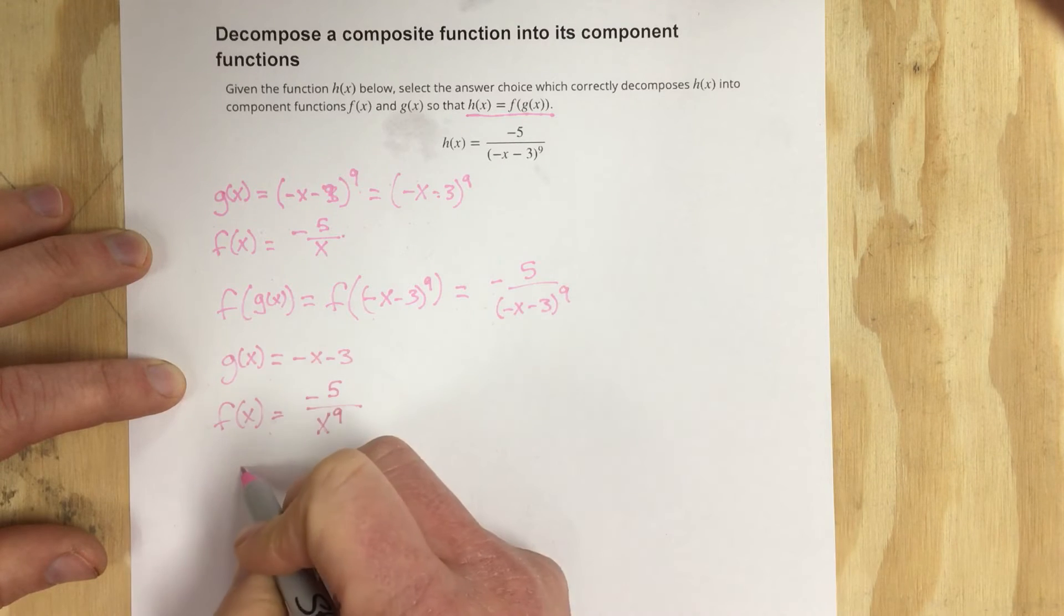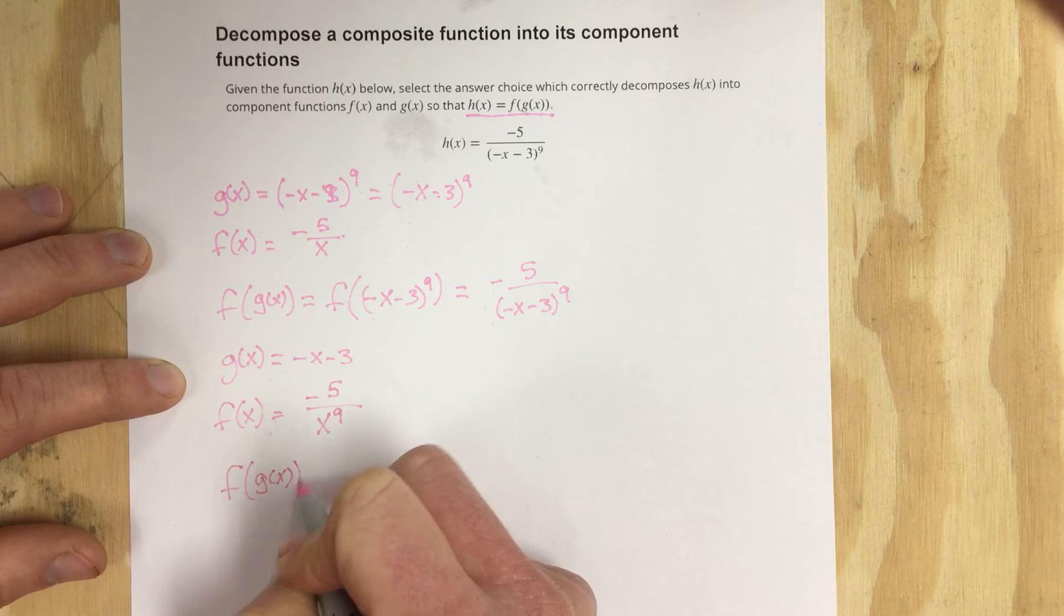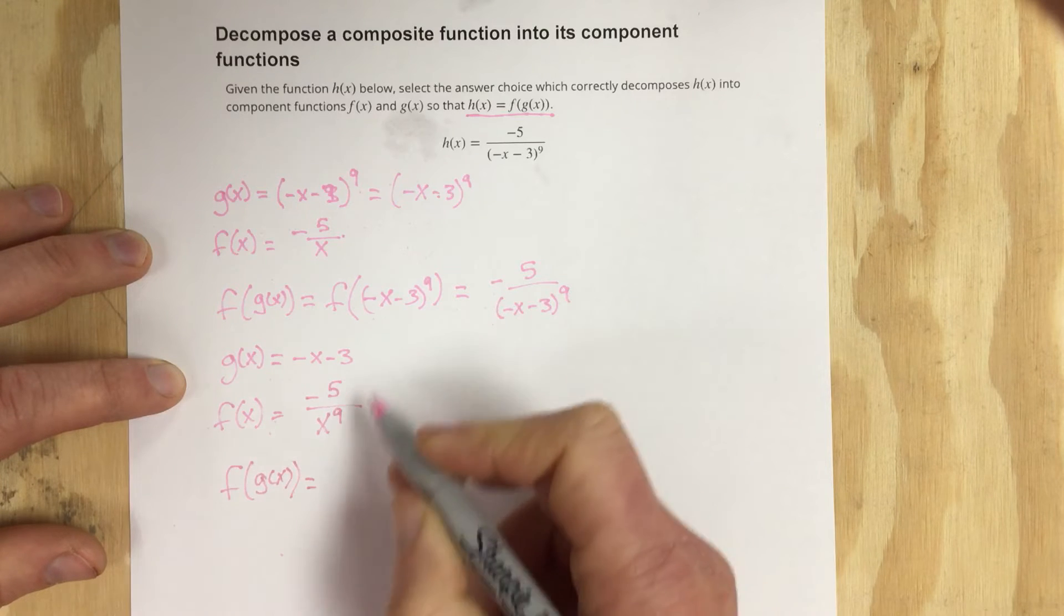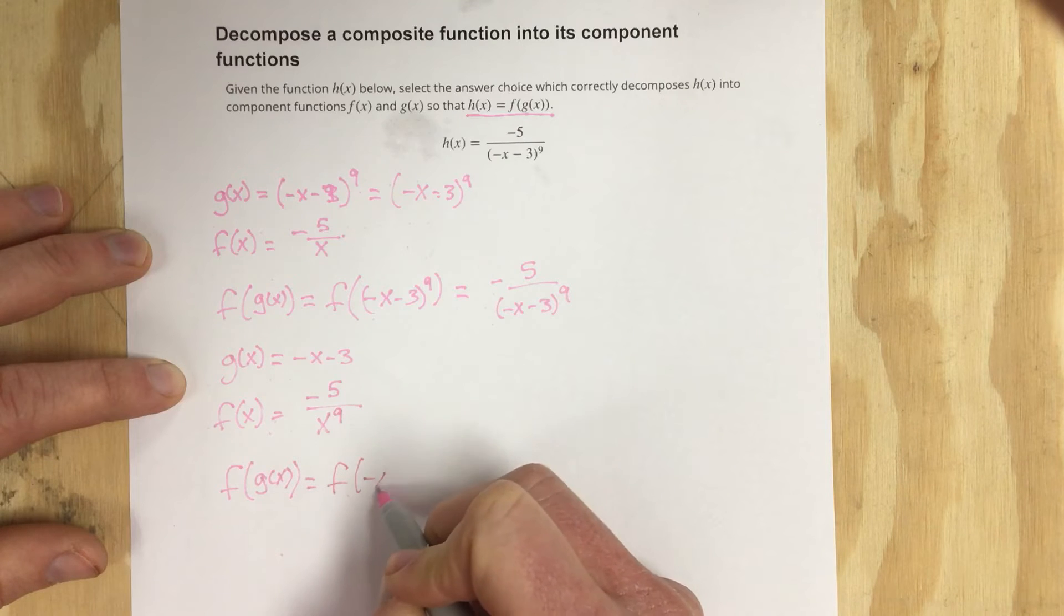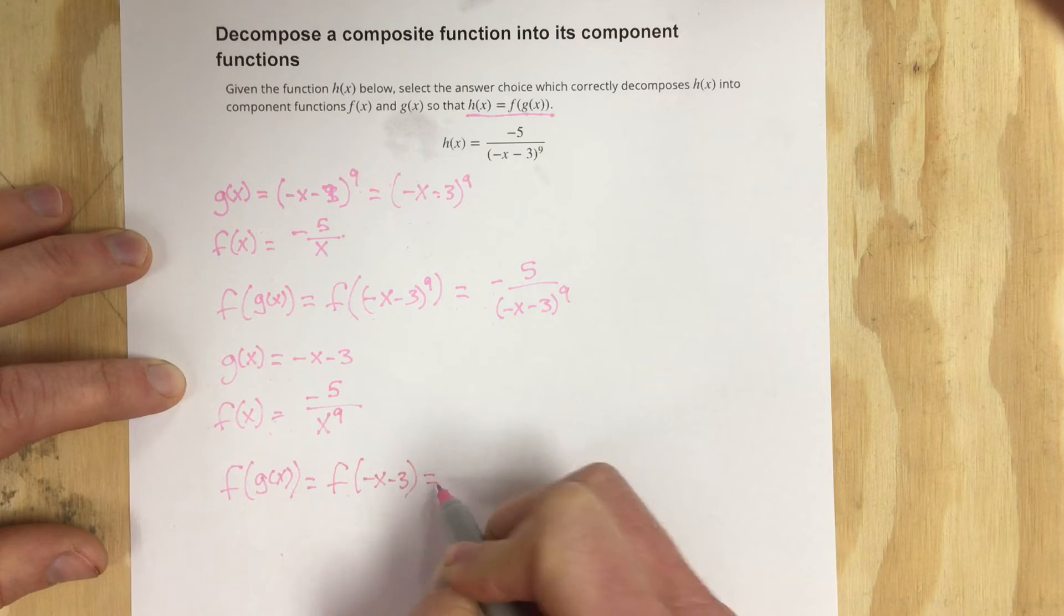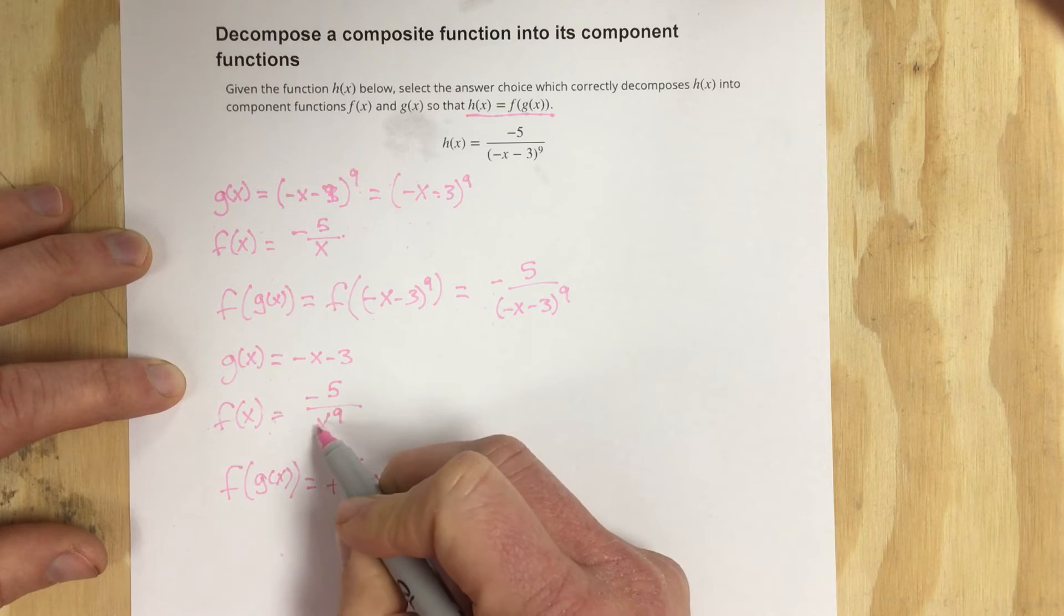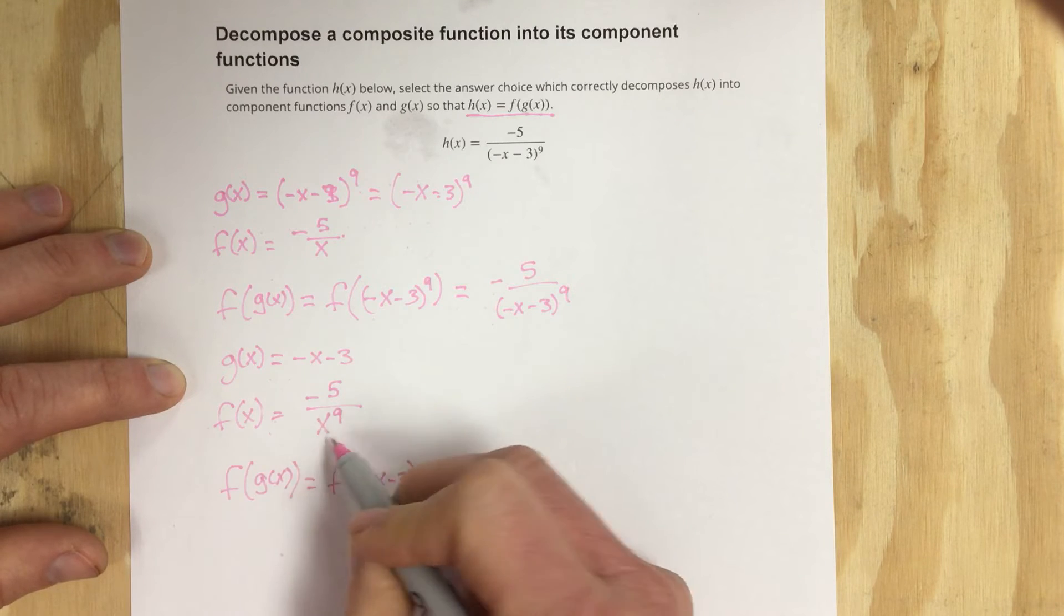How that would look is f of g of x. If I go through and check this I plug the g of x in so I have f of negative x minus 3. I would then take the negative x minus 3 and plug it into the f function for x.